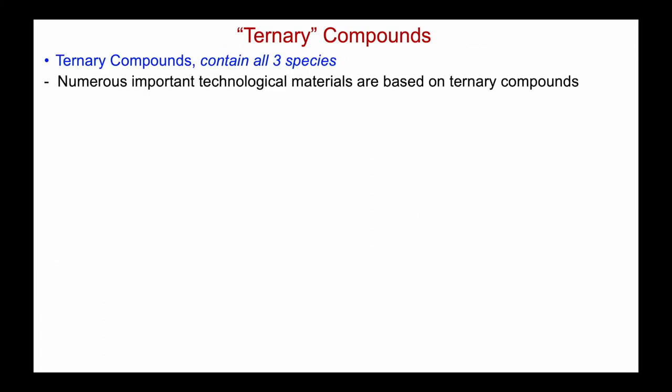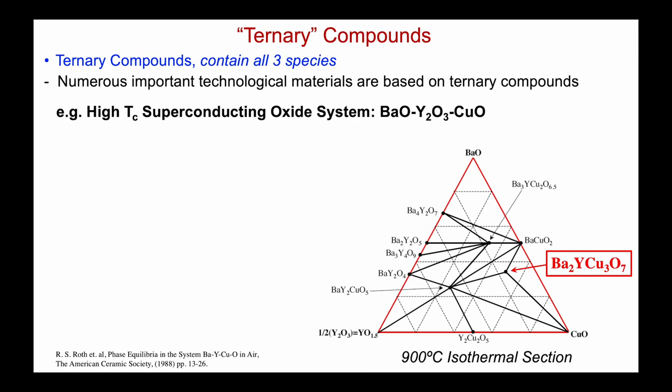Many ternary phase diagrams also contain ternary compounds — compounds that contain all three species A, B, and C. There are numerous important technological materials based on ternary compounds. A well-known example is the high-temperature superconducting oxide systems based on copper oxides, in particular BaO–Y₂O₃–CuO shown here.